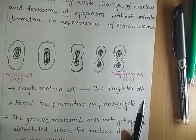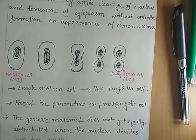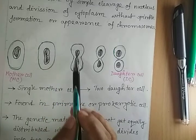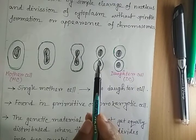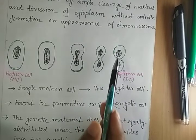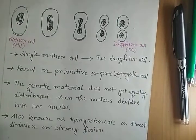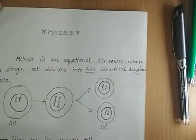During amitosis, a single mother cell gives two daughter cells. The genetic material first forms a dumbbell shape structure, and getting separated, at last two nuclei are formed which are not equal to each other. Finally, a single mother cell gives two daughter cells.